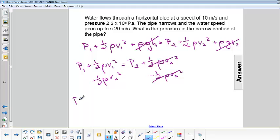So we're left with p2 is equal to p1 plus 1 half rho v1 squared minus 1 half rho v2 squared.